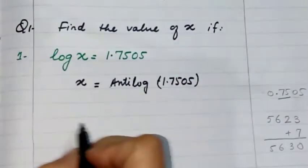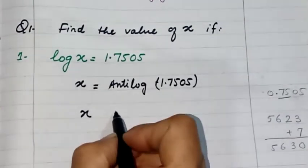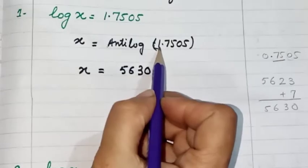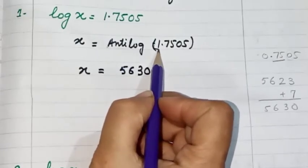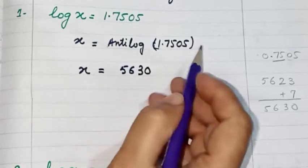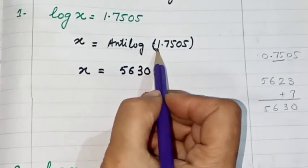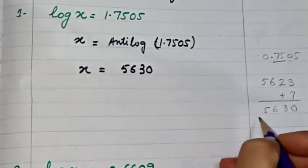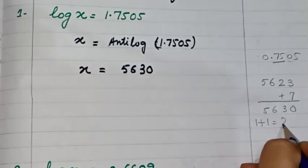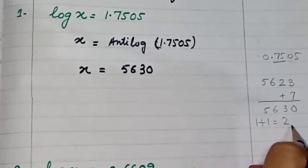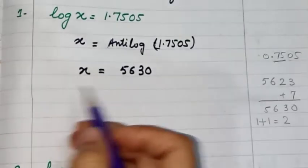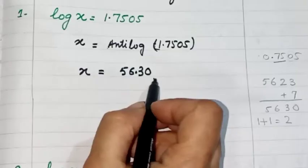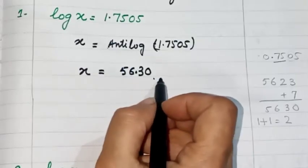So our x will be equal to 5630. Now, the characteristic gives us a hint about where to put the decimal. As the characteristic is positive, we add 1 to it: 1 plus 1 equals 2. We place the decimal after 2 digits from the left-hand side. So the answer is 56.30.